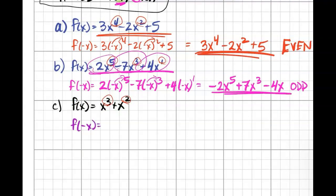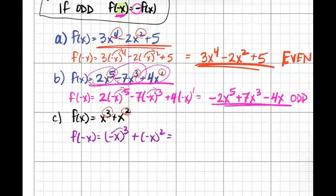I get negative x cubed, negative x squared, and then from there, the negative cubed is going to stay negative, the negative squared is going to cancel the negative. So I'm getting...